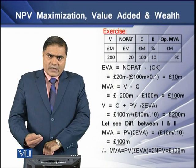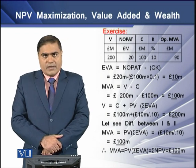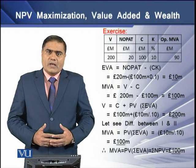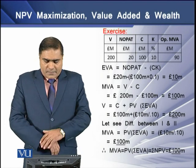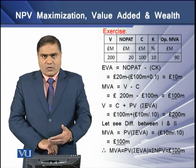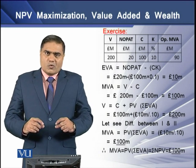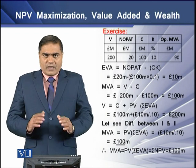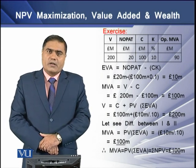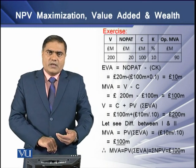To determine market value added, we deduct capital from the market value — deducting 100 million from 200 million gives a market value added of 100 million. The market value of the firm equals the present value of EVAs plus capital. We divide the EVA of 10 million by the cost of capital of 10%, giving a present value of EVA of 100 million. Adding this to the 100 million of capital gives a total market value of 200 million on the basis of EVA.